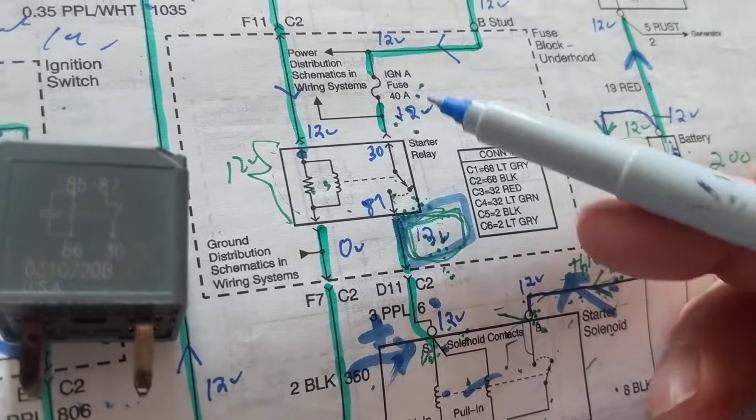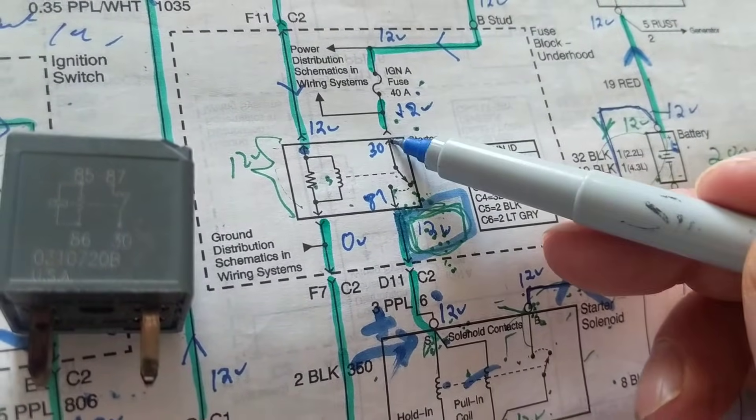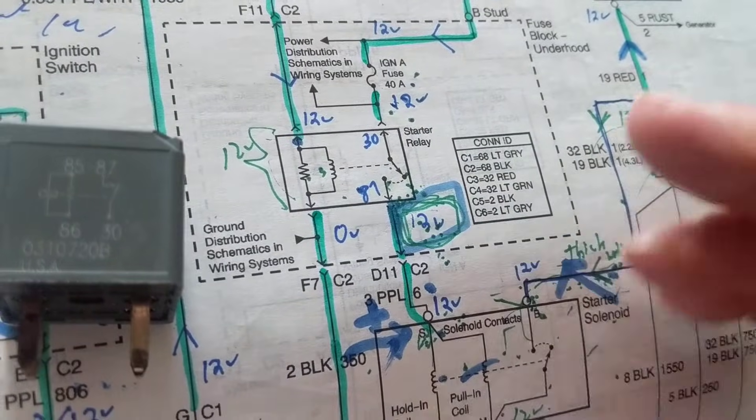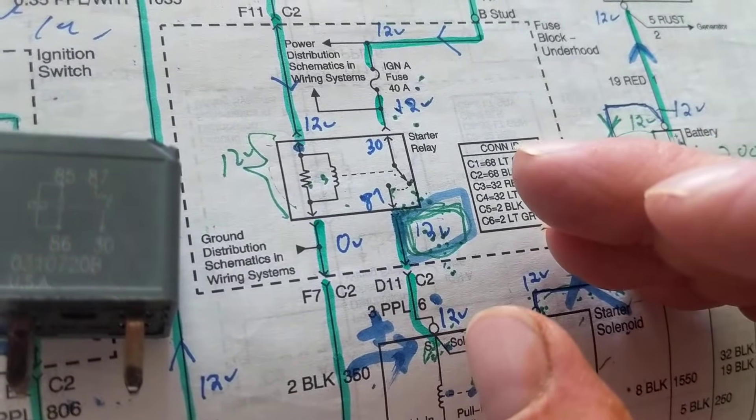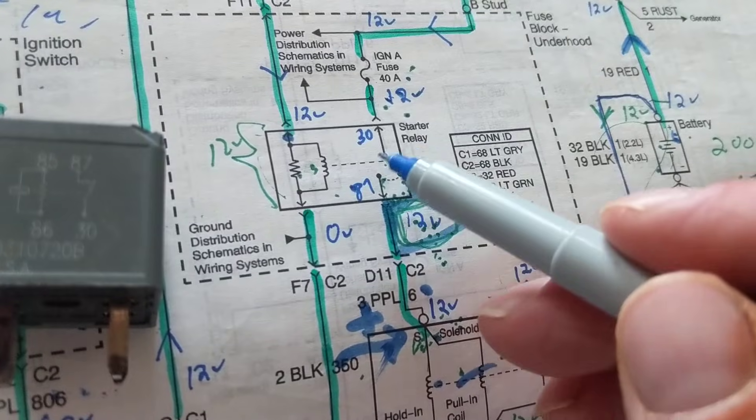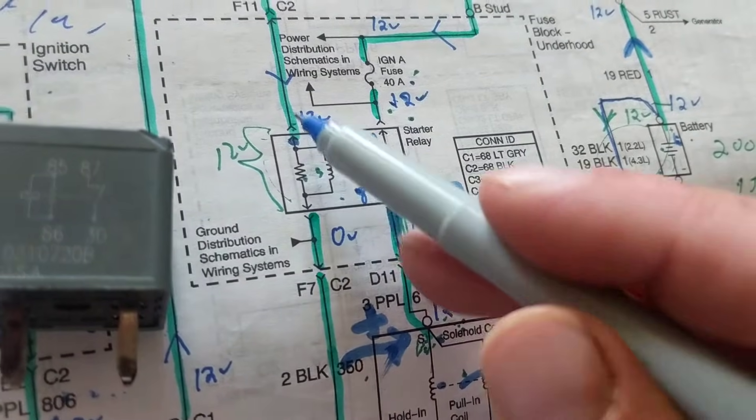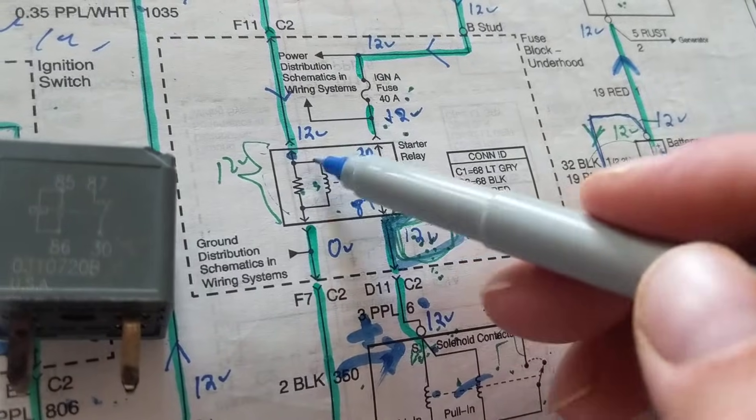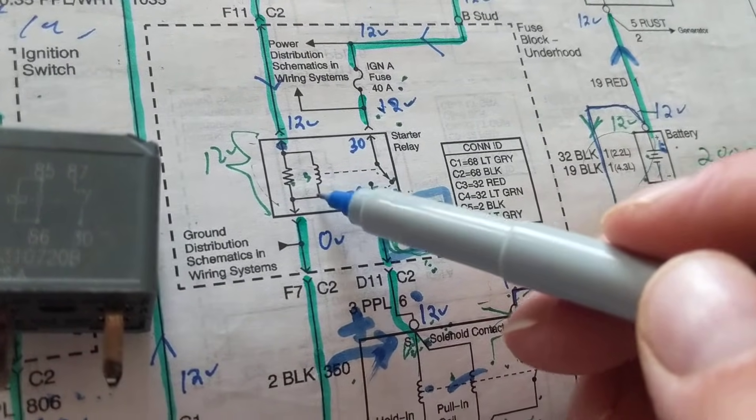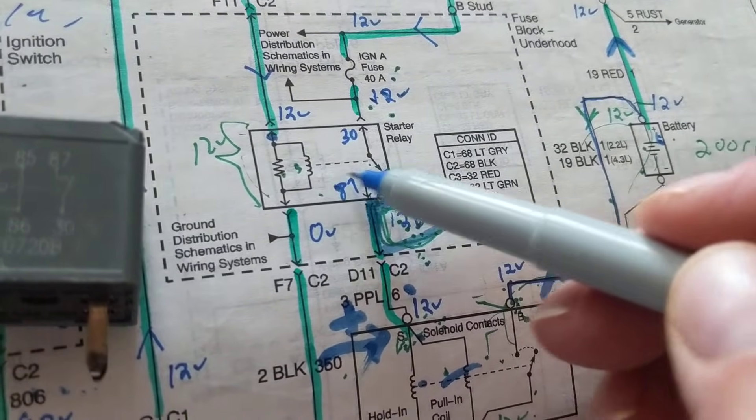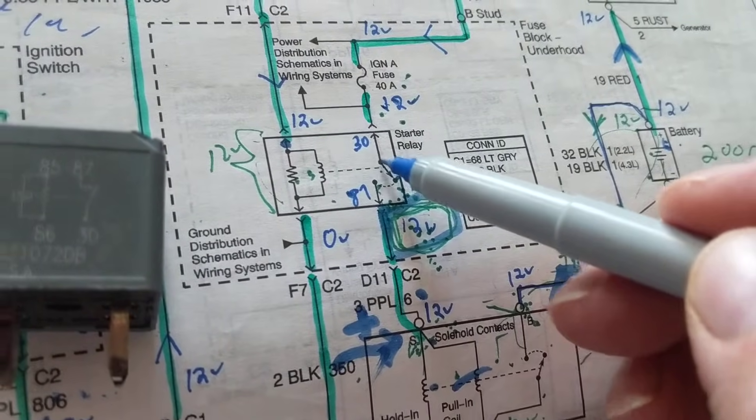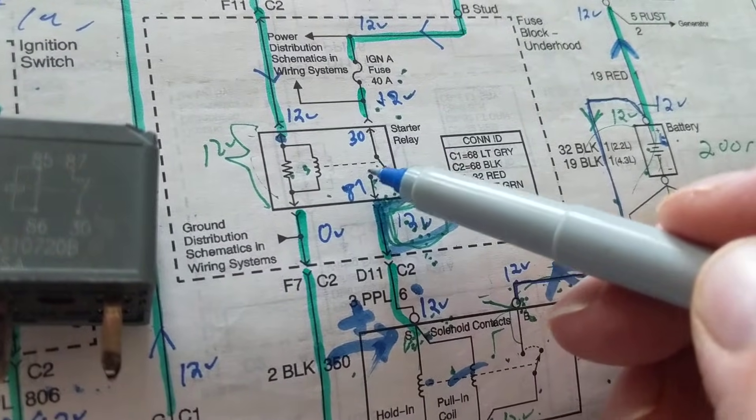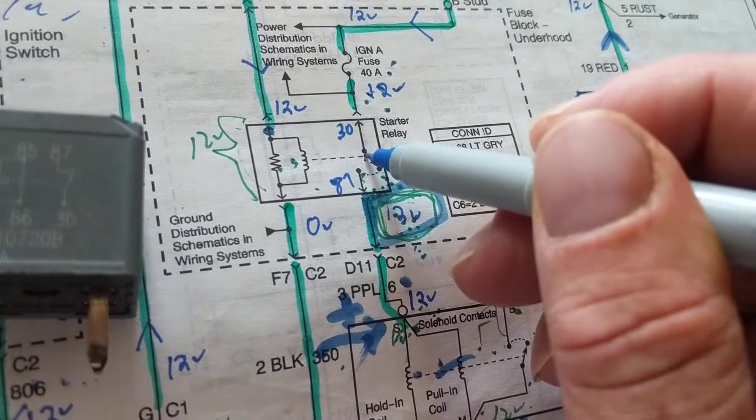Now this will fool you sometimes. 87 can be up here, sometimes 30 can be down here, so that's something you have to pay attention to. So 30 is when current flows through this coil, not the resistor. Through the coil it creates an electromagnetic field. These dots indicate that the switch contact is being drawn in.